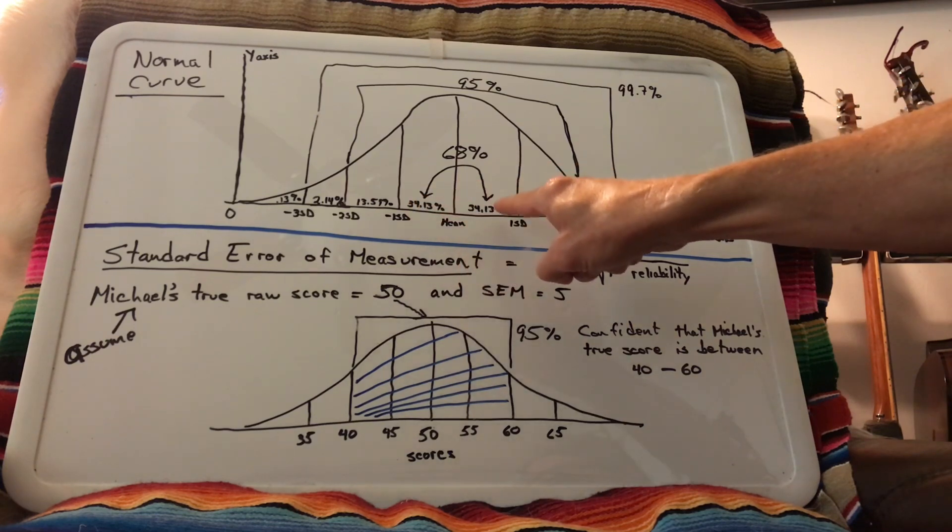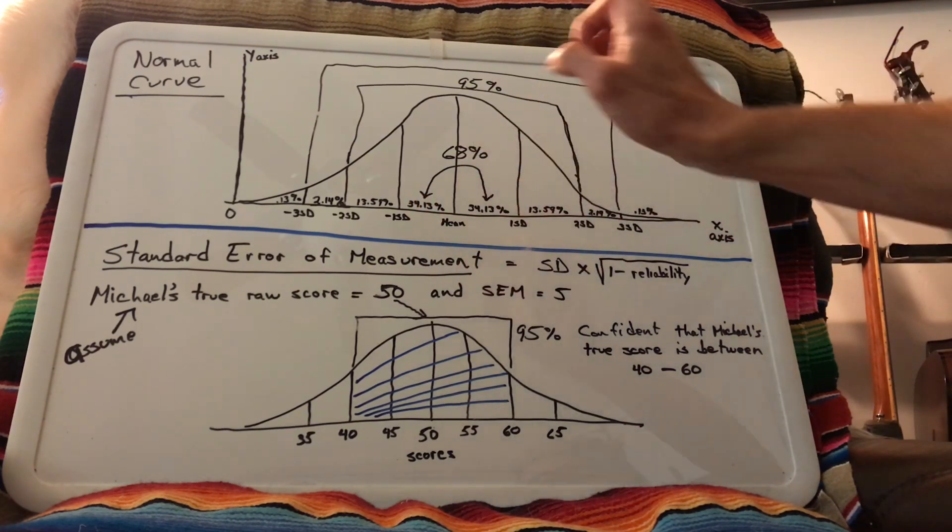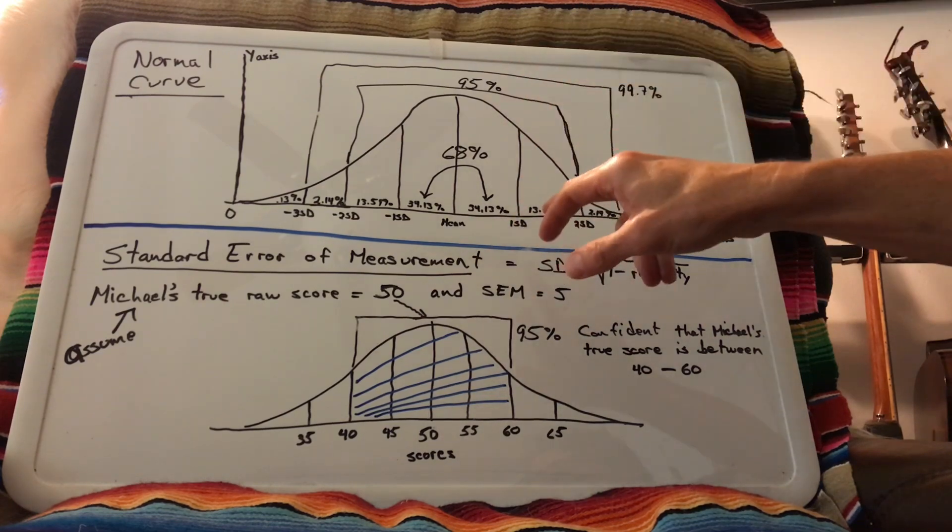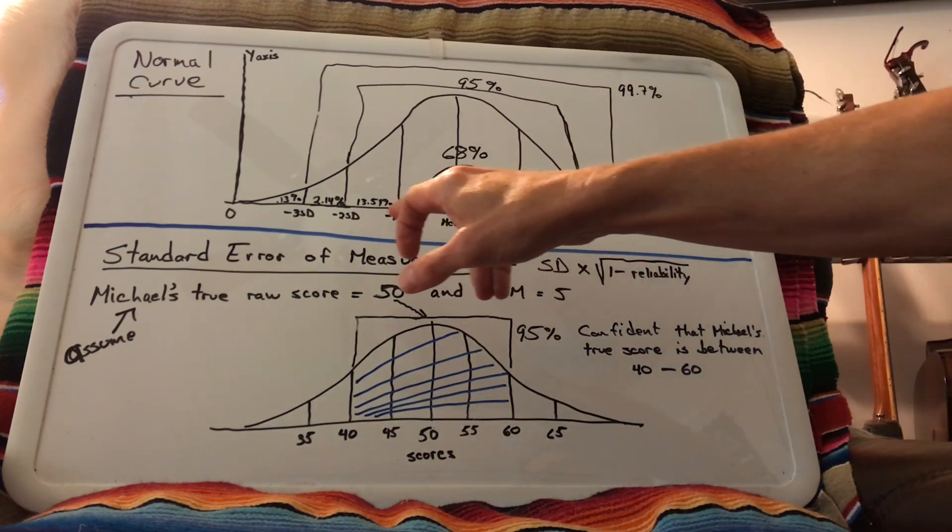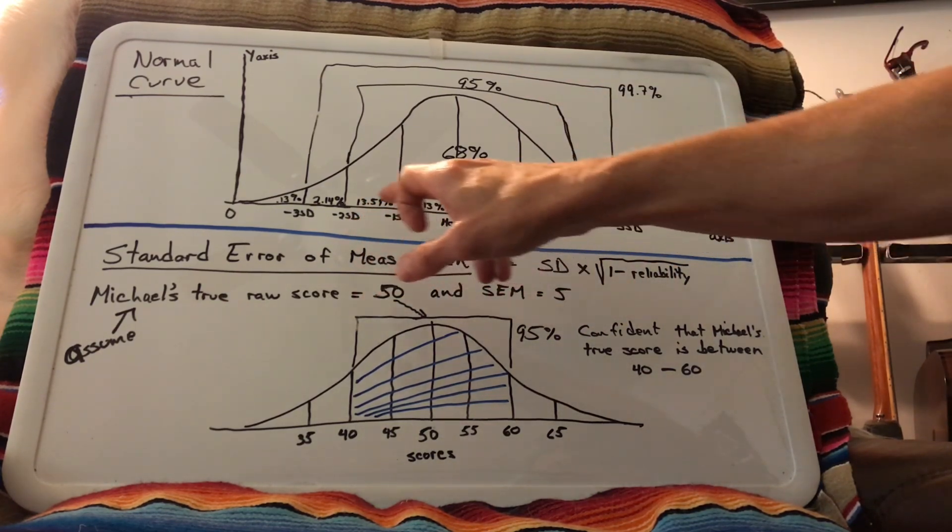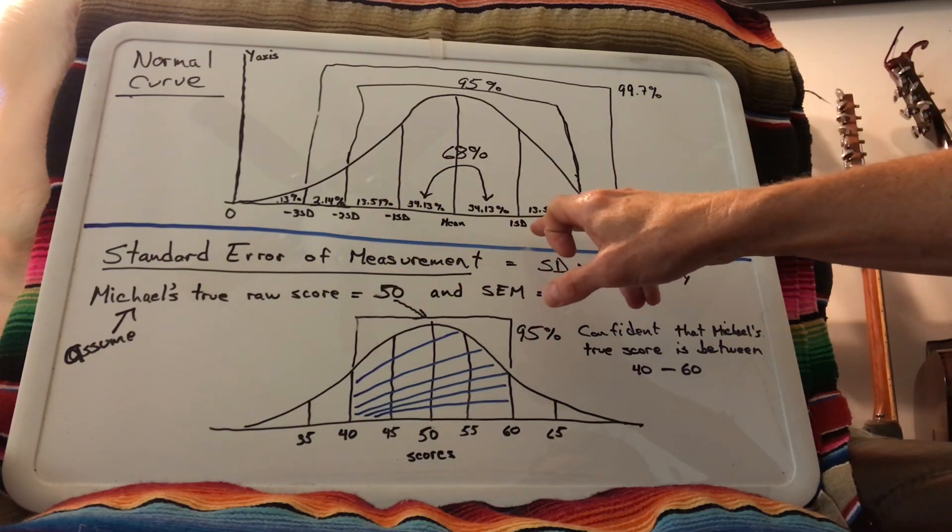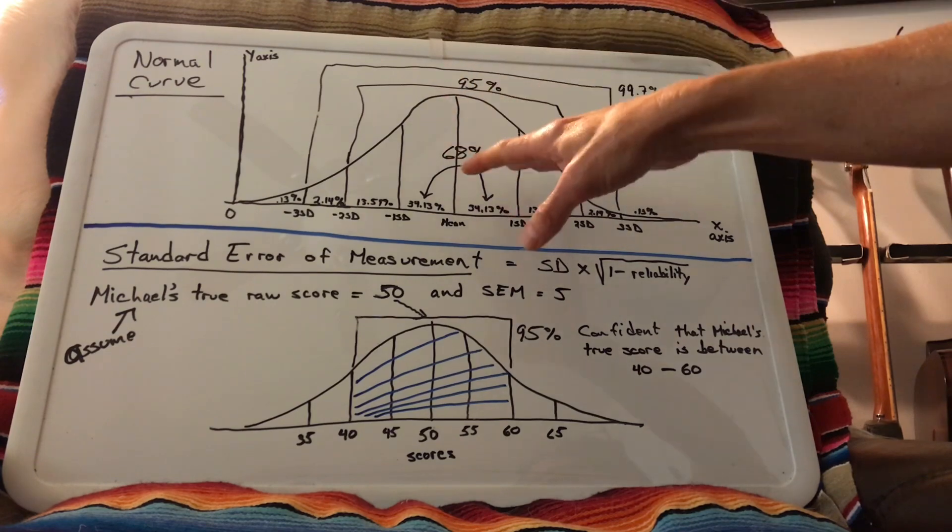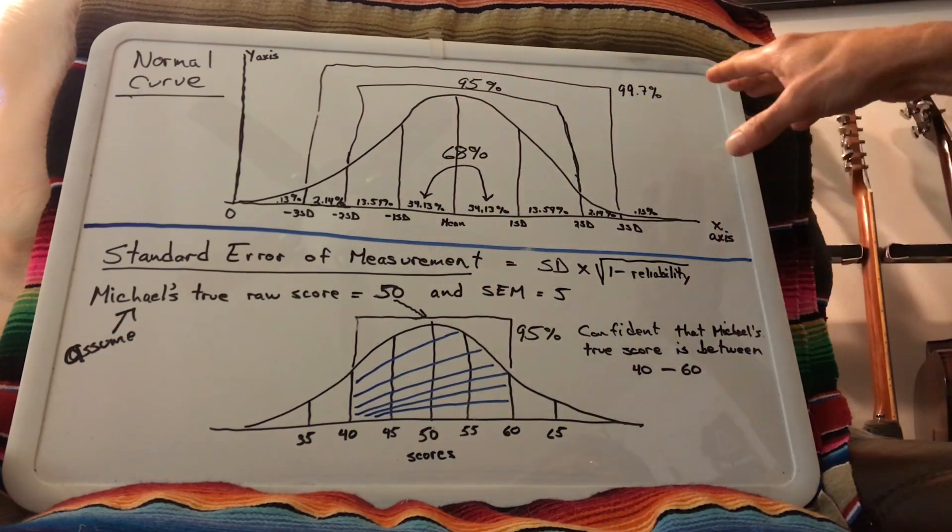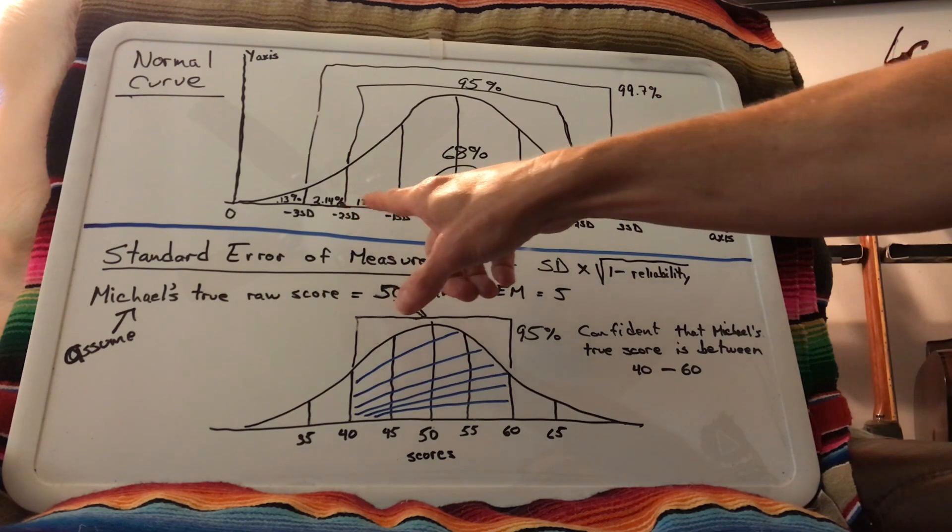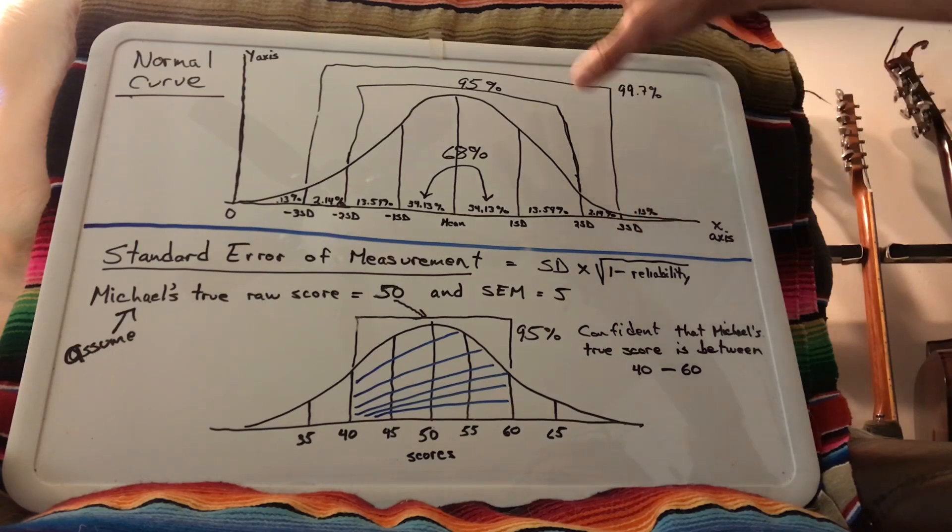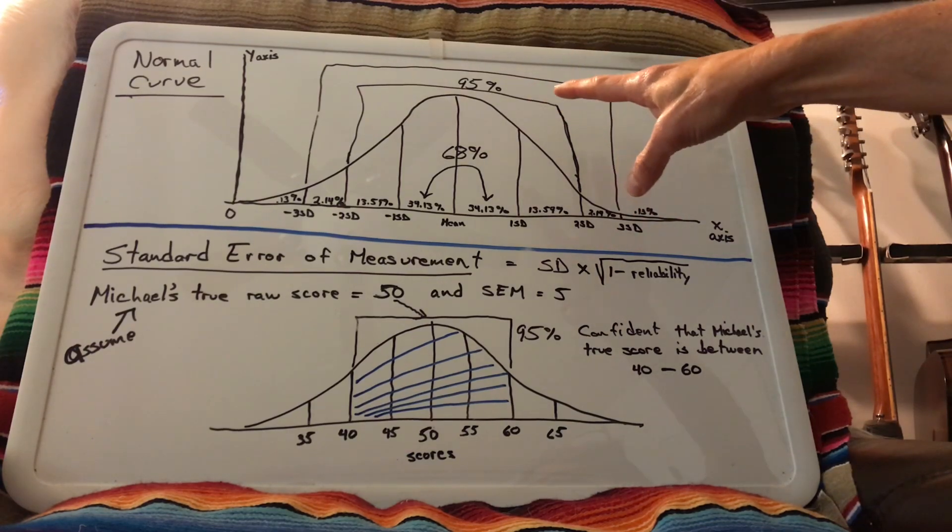We can add these percentages up and see that we get 68%. 95% of our sample would fall between plus and minus two standard deviations of the mean, and we can add this up and we'll see that equates to 95% of our sample. And then between plus and minus three standard deviations of the mean is going to capture 99.7% of our sample on a normal curve. And we're talking about people's height.